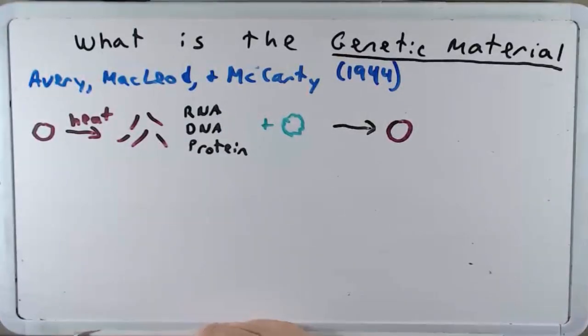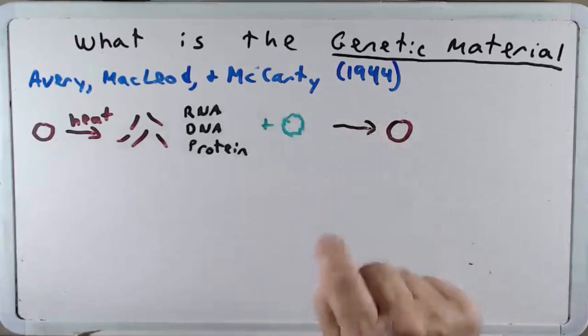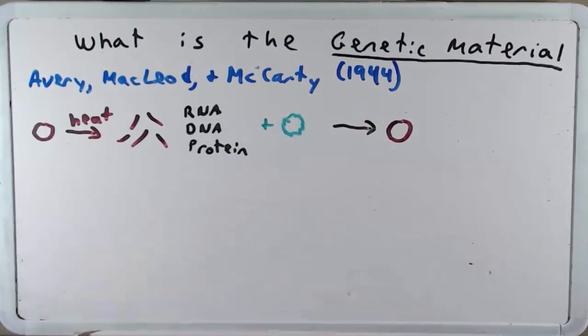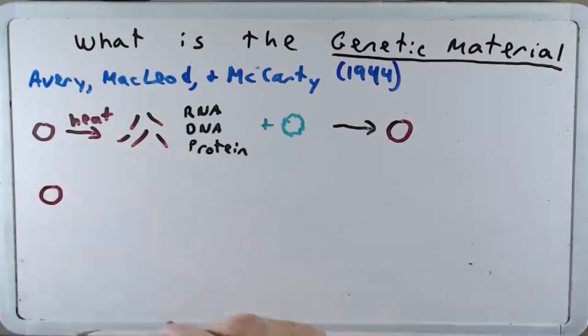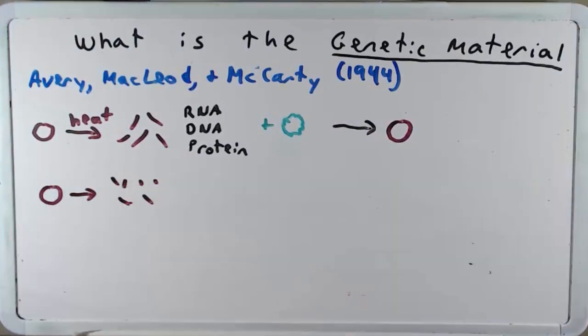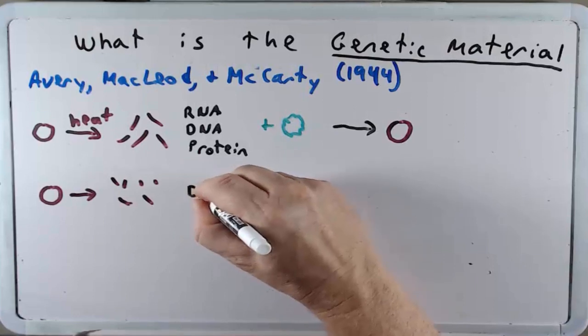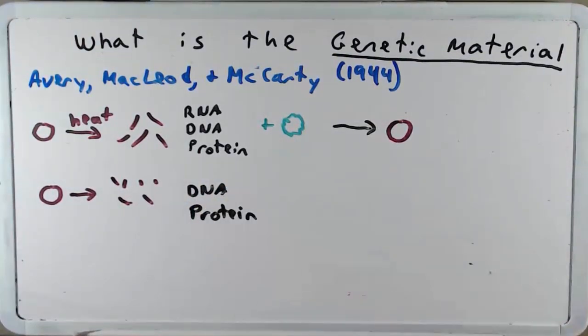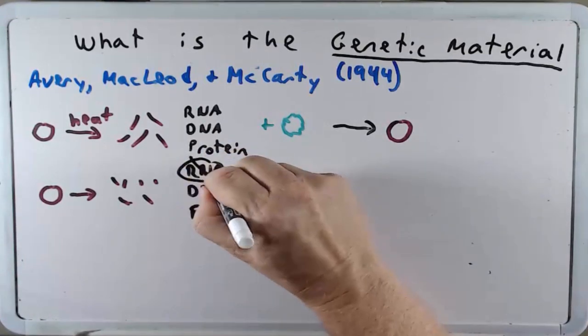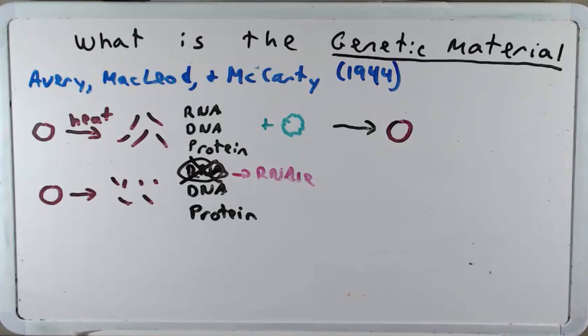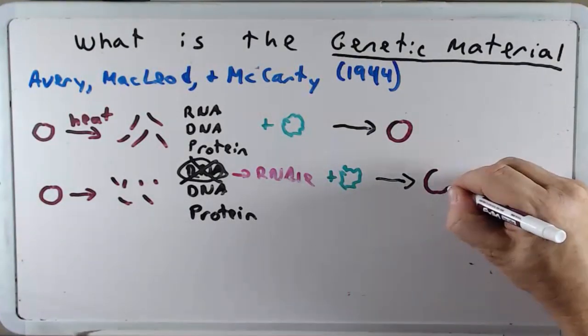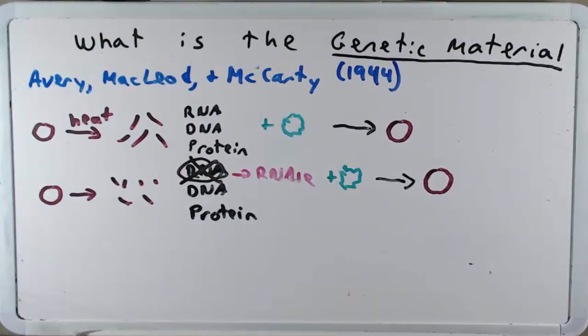So they wanted to determine which of these, or if any of these, were the transforming principle. And if they identified what was the transforming principle, they could suggest then that that was the genetic material. So next, they took the smooth bacteria, they heated it as they did before, and they removed the RNA. And so all that was left was DNA and protein. They removed the RNA through an enzyme called RNase. They then added the rough bacterium. And what they discovered was that transformation still occurred, suggesting that DNA or protein was that transforming principle.